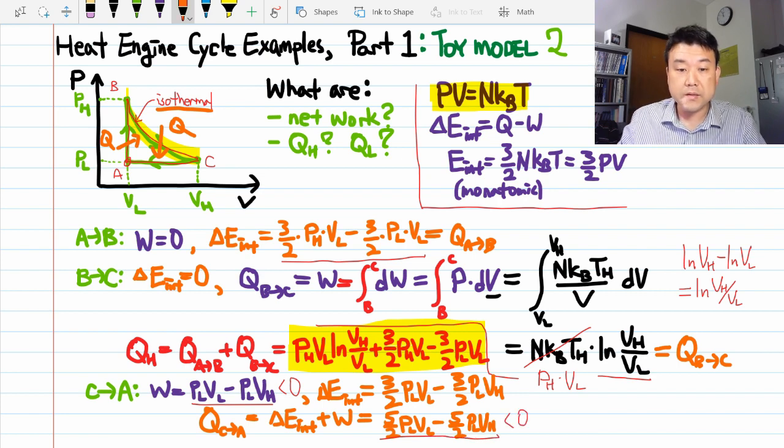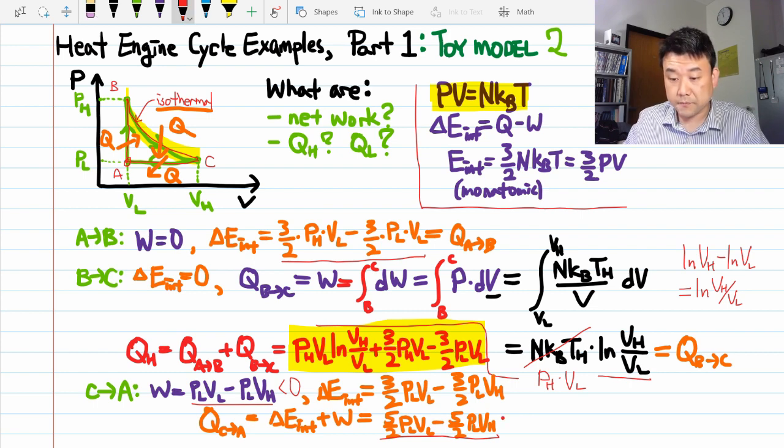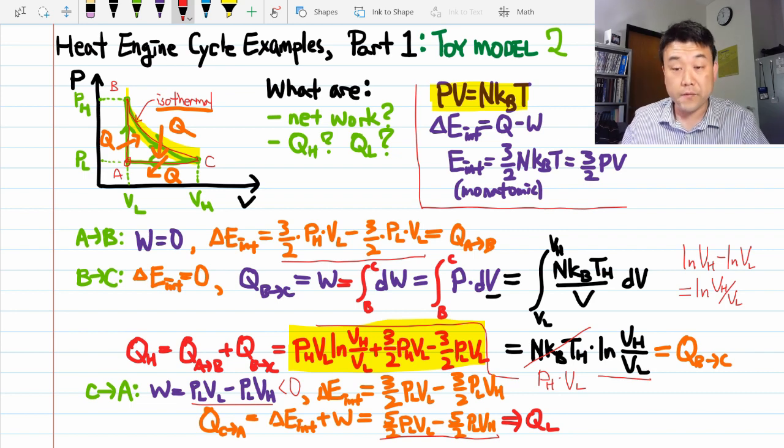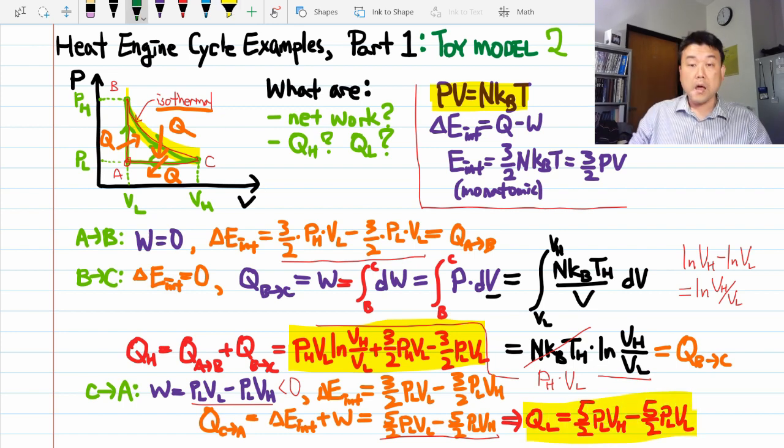So, that means the heat flows out of the system in this isobaric compression. In fact, that's the only segment where heat flows out of the system. So, this gives the QL. Or rather, QL is the minus of this since it's by convention defined to be positive. Let me highlight this so that I can find it later.